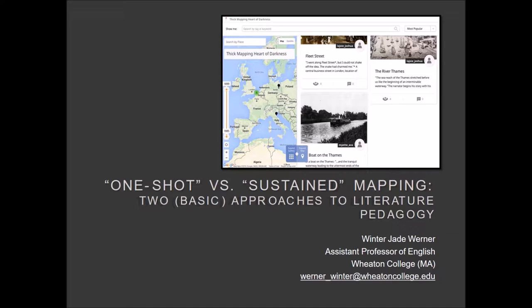What I'm going to talk about is the relationship — my experience doing one-shot mapping and sustained mapping over the course of a course and the independent study, and how these two things ended up working with each other and how we can bring together these two different types of teaching to make them work in conjunction. I'm not going to say I was successful doing it this time around, but these are the lessons I've learned.